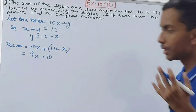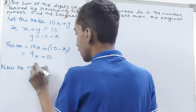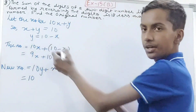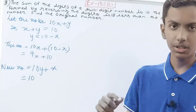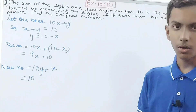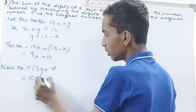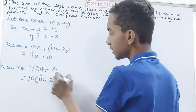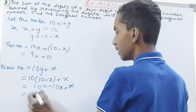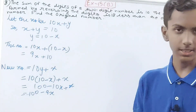Now we reverse the digits. The reversed number becomes 10y + x. Substituting y = 10 − x, we get 10(10 − x) + x = 100 − 10x + x = 100 − 9x. So the reversed number is 100 − 9x. Note that we are just swapping the digits, not changing their values — like turning 32 into 23, not 42.